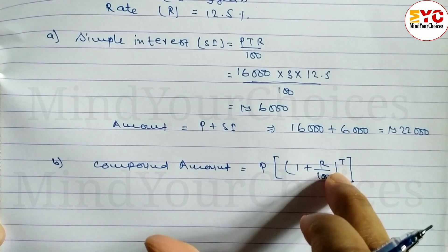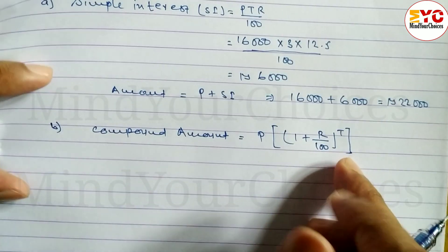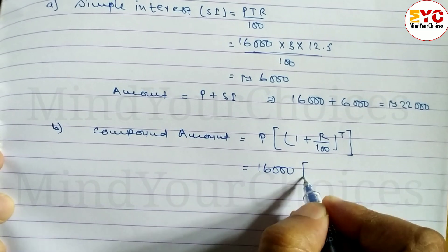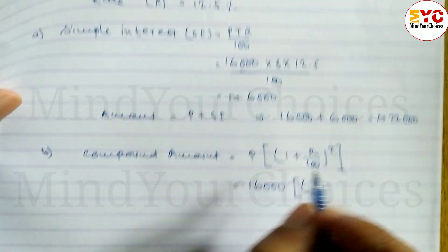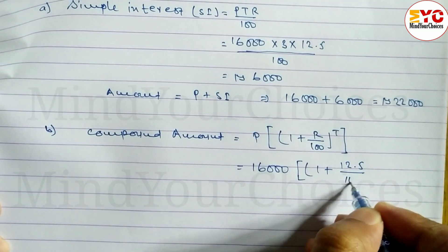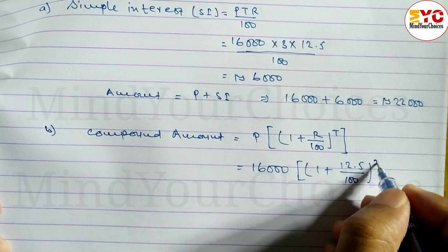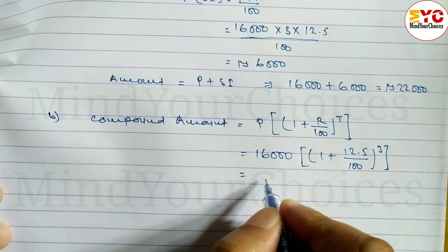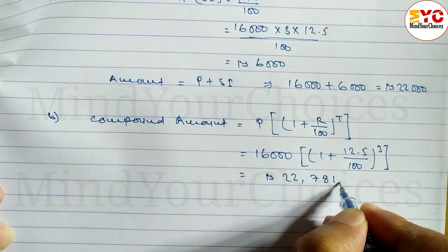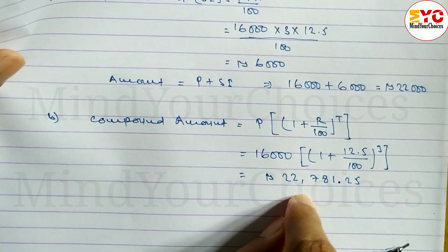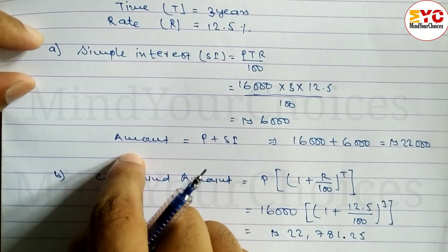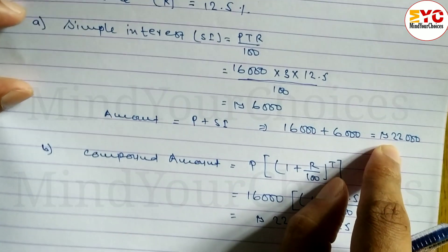CA = 16,000(1 + 12.5/100)^3 = 16,000(1.125)^3 = Rs. 22,781.25. The compound amount received from the shopkeeper is Rs. 22,781.25.